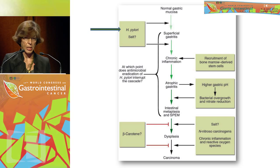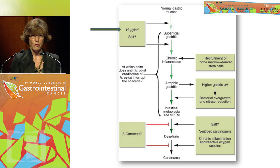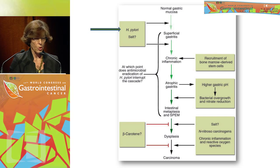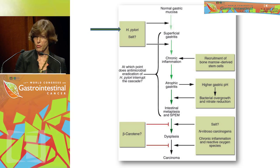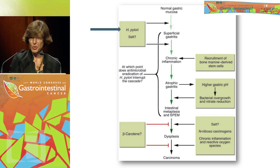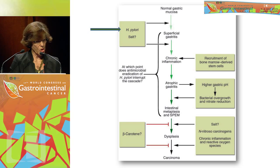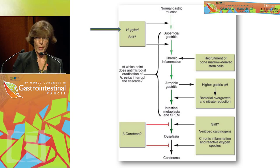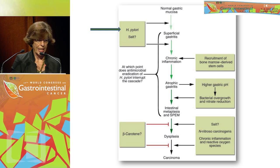If we are talking about gastric carcinogenesis, we have to come back always to what is called the Correa model of gastric carcinogenesis. By the way, you may know that Pelayo Correa is retiring later this year in June, so it is also an opportunity to mention the superb work that he has developed. Patrick Tan has already shown the same model using histological pictures.